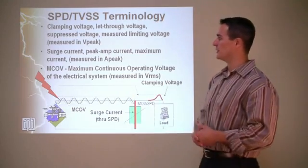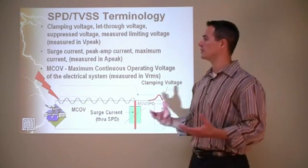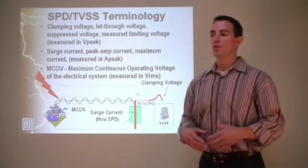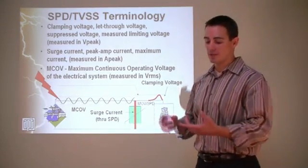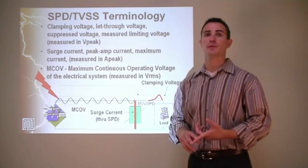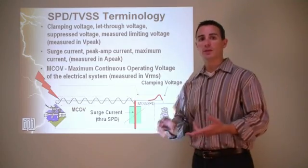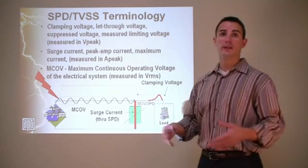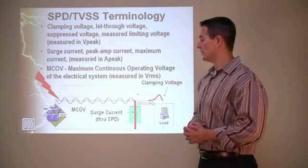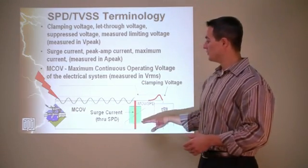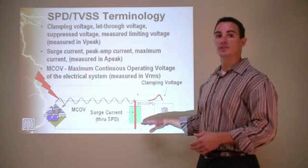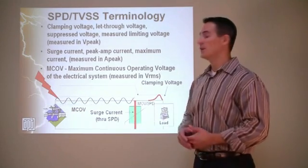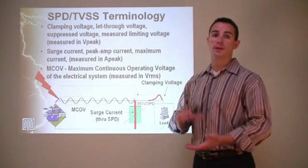We have MCOV, which stands for maximum continuous operating voltage. In surge environments, we talk about two MCOVs: the MCOV of the SPD itself, and the MCOV of the electrical system — 120, 277, whatever that may be. The MCOV of the SPD is always going to be larger than that of the electrical system, because we don't want them bumping into each other.